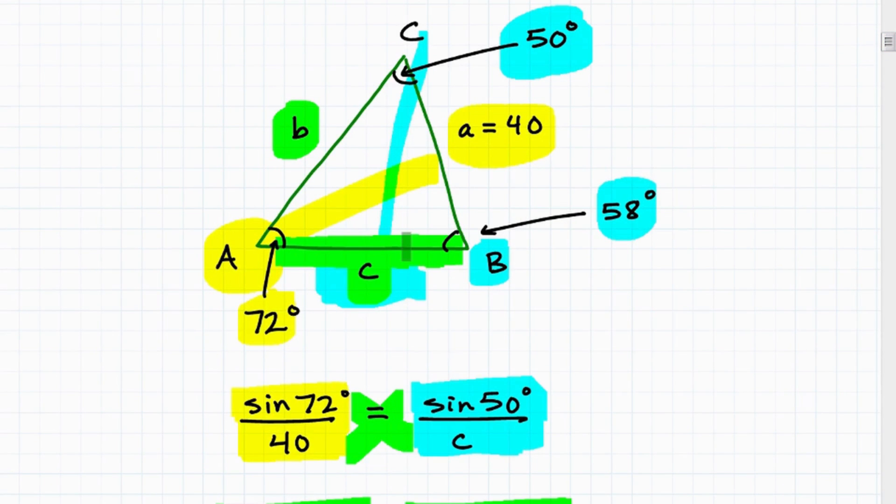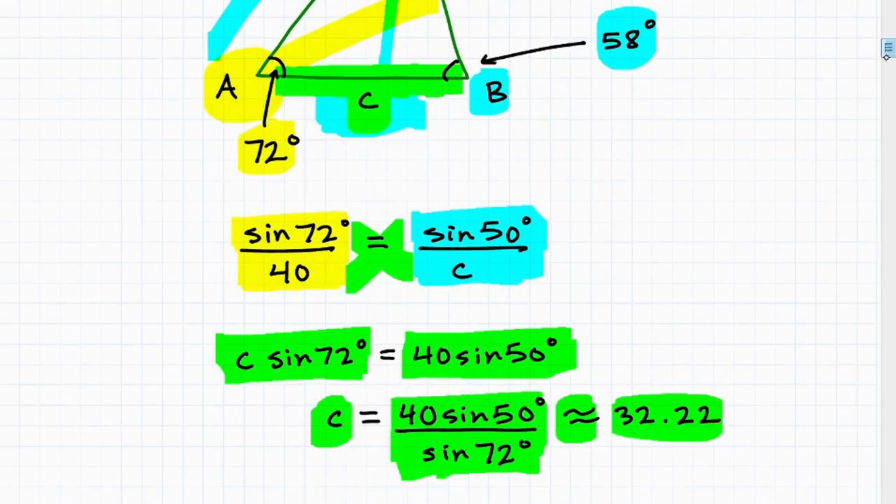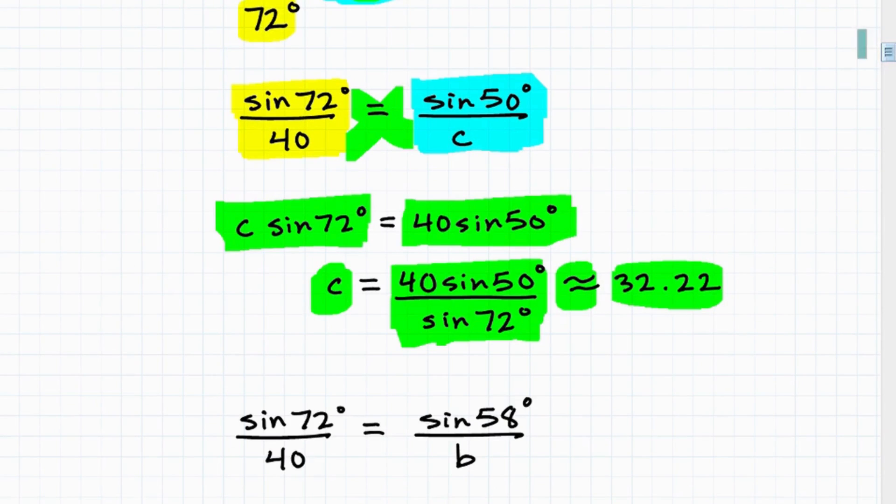Okay. So now we need to get that length right here, length B. And I think that would be it for this triangle. All right. So let's keep our same proportion. We can keep using this right here.